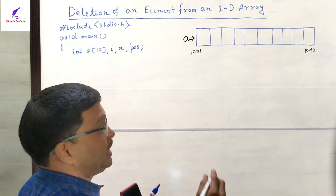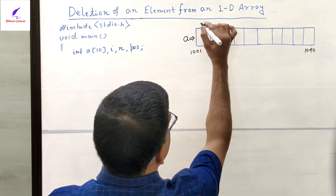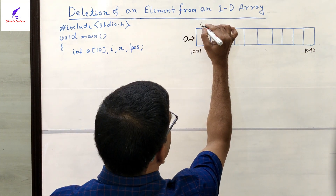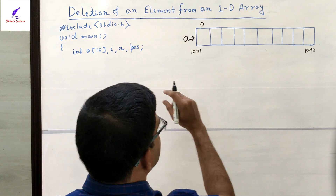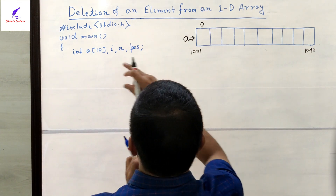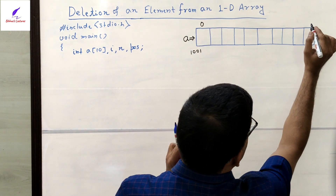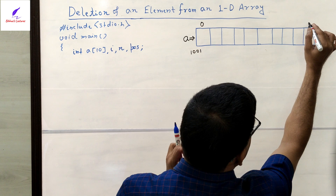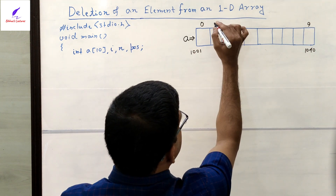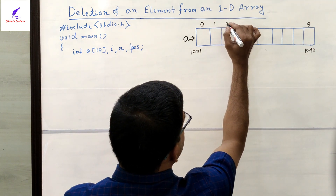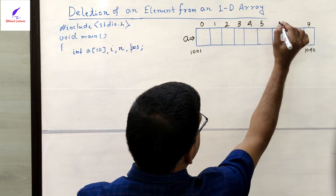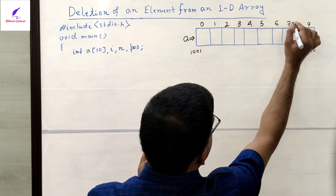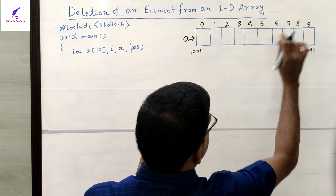Array index always starts from 0, so the first index is 0 and the last index is size minus 1, which is 10 minus 1 = 9. The indices go from 0, 1, 2, 3, 4, 5, 6, 7, 8, up to 9.